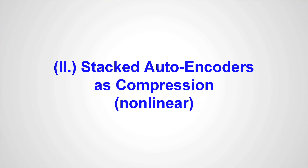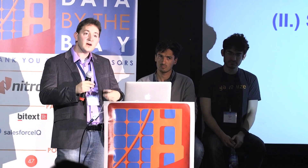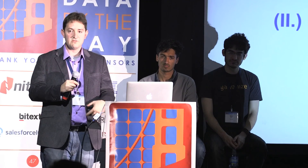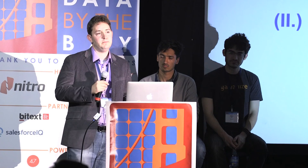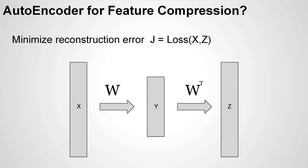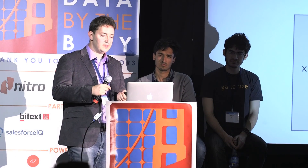That's one example — a linear example of compressing the high-dimensional signal into a lower-dimensional signal. Let's talk about another one, just for contrast, that's nonlinear: stacked autoencoders. This is one of the first breakthroughs in deep learning neural nets. In a non-stacked autoencoder, you have your input data X, you map it down with a matrix W that is shorter than it is wide, taking a long X vector and producing a shorter Y vector.